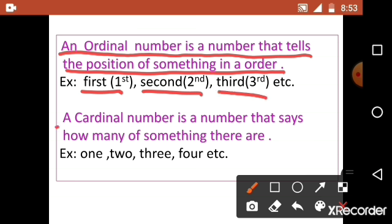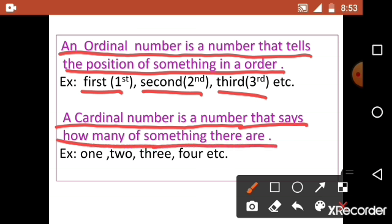A cardinal number is a number that says how many of something there are. Example: one, two, three, four, etc.